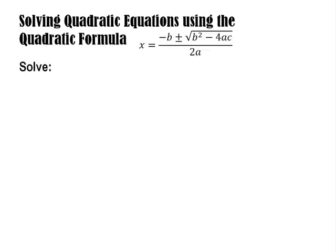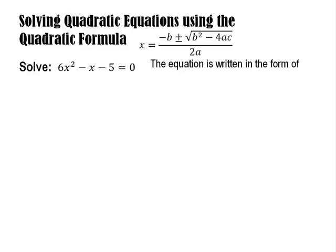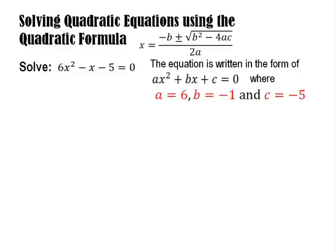We will have some examples. Solve: 6x² minus x minus 5 is equal to 0. The equation is written in the form ax² + bx + c = 0. Now we're going to identify the values of a, b, and c to use in our quadratic formula. So for 6x² - x - 5 = 0, our a is 6, our b is negative 1, and our c is negative 5.